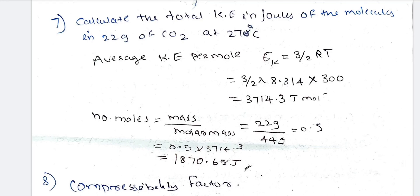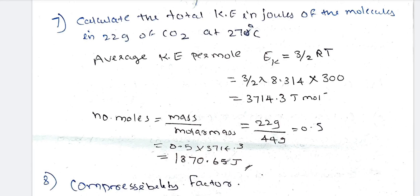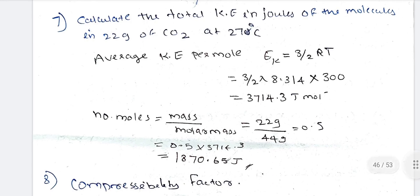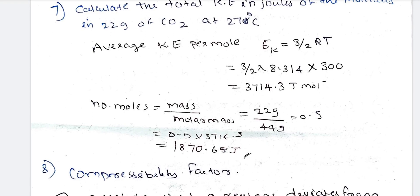Now for the numerical problem: the number of moles of carbon dioxide is calculated as given mass divided by molecular mass. The given mass is 22 grams. The molecular mass of CO₂ is 44 grams per mole, since carbon is 12 and oxygen is 32. Therefore, the number of moles = 22/44 = 0.5 moles of carbon dioxide.